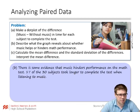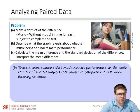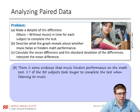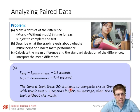If we calculate the mean difference, we get 2.8 seconds. There's a little more data on the right side of the dot plot. But the standard deviation is quite a bit larger — 7.49 — so that's not going to be a statistically significant difference. The time it took these 30 students to complete the arithmetic quiz with music was 2.8 seconds longer on average than without music. We'll eventually do the full inference procedure for this.